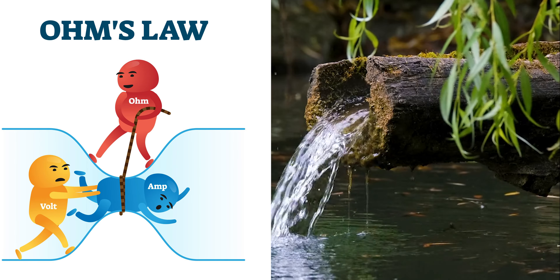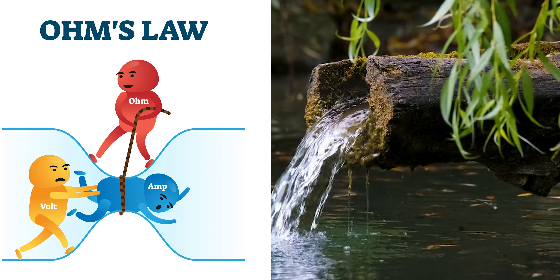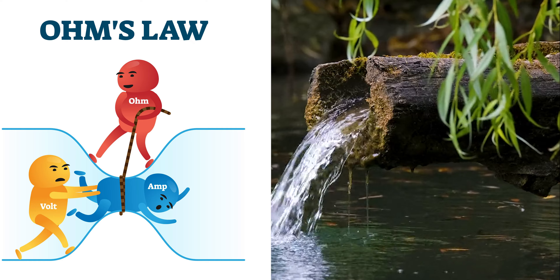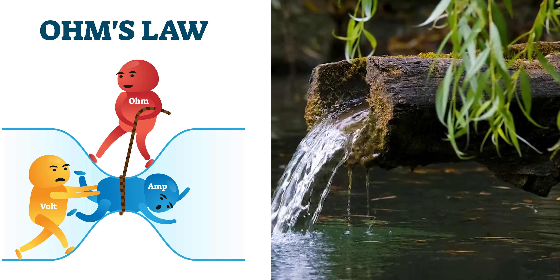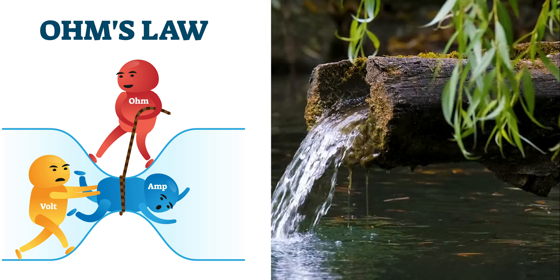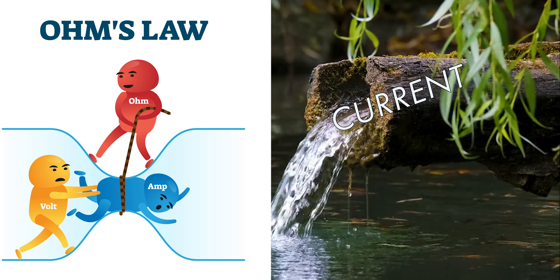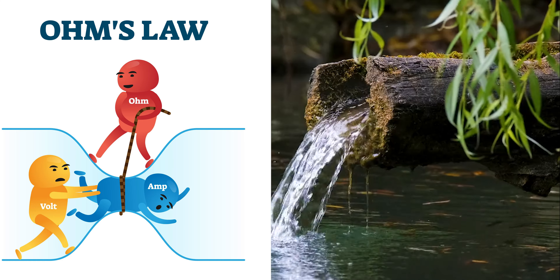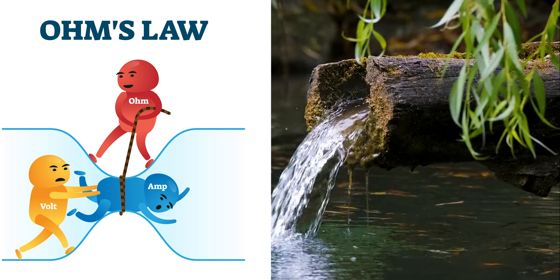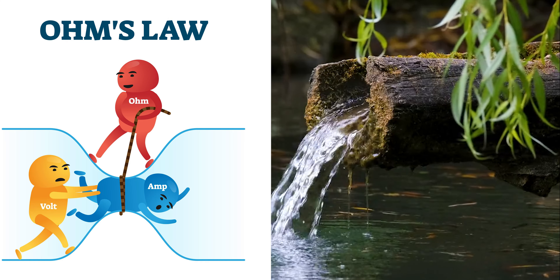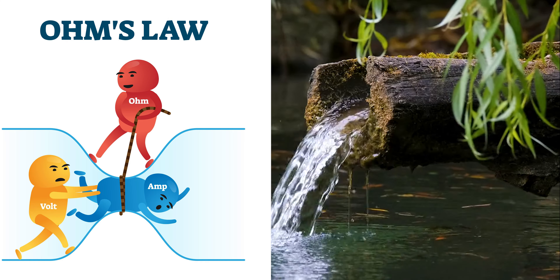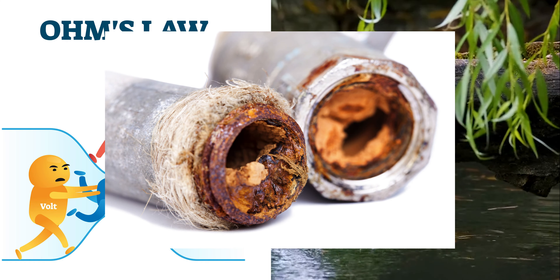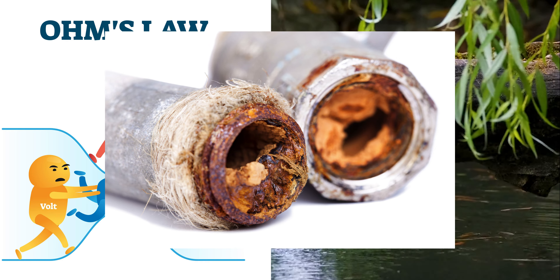Imagine a river flowing through a narrow channel. The voltage is like the force or pressure of the water pushing through, while the current is the actual flow of water. The resistance can be likened to obstacles or narrowing points that hinder or control the water's flow.